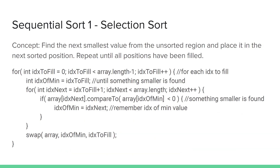The first sequential sort we'll look at is Selection Sort. It walks through each position and finds the smallest value from the unsorted region using a linear search to place in the next position. This search is repeated until all positions have been filled. The example code here, like all of our examples, is sorting an array, but the algorithm concepts can be adapted for sorting collections like lists. You can see the characteristic nested loop of a sequential sort here. The outer loop walks through each index position, and the inner loop performs the linear search through the unsorted region to find the smallest element, which is then placed in position with a swap operation.